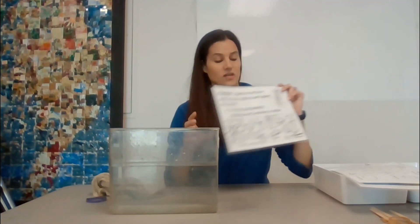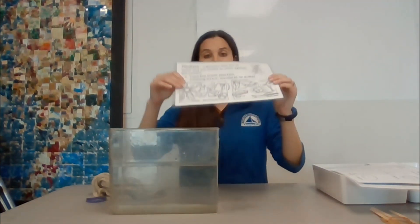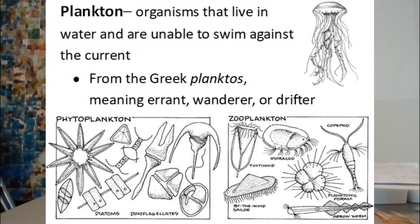The word plankton actually comes from the Greek word planktos, meaning wander. That's because plankton are really just any organisms that are unable to swim against the current — either because they're too small, or they're just not strong enough. It doesn't mean they can't swim at all, but they are not able to swim against the current. So in reality, the waves and the currents in the water are what controls where the plankton go.